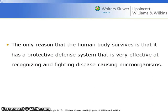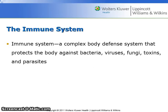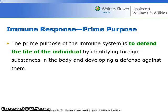The only reason that the human body survives is that it has a protective defense system that is very effective at recognizing and fighting disease-causing microorganisms. The immune system is a complex body defense system that protects the body against bacteria, viruses, fungi, toxins, parasites, and even cancer. The prime purpose of the immune system is to defend the life of the individual by identifying foreign substances in the body and developing a defense against them.